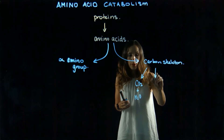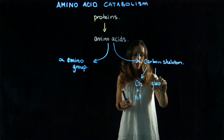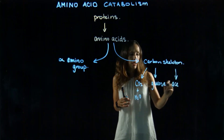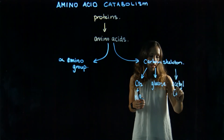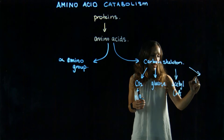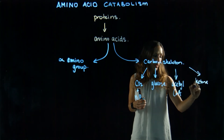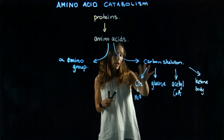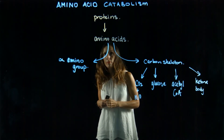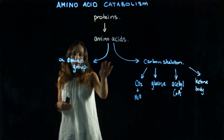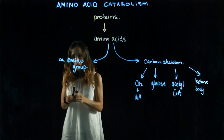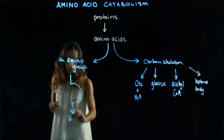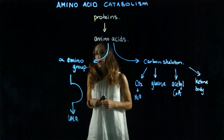The carbon skeleton can also serve as precursors for glucose, and depending on what the R group is, some amino acids can contribute to acetyl-CoA and others to ketone bodies. So depending on the type of amino acid, the carbon skeleton has different fates. For the nitrogen portion, that is removed, and ultimately in the urea cycle, that nitrogen is excreted from the body because it's not needed.